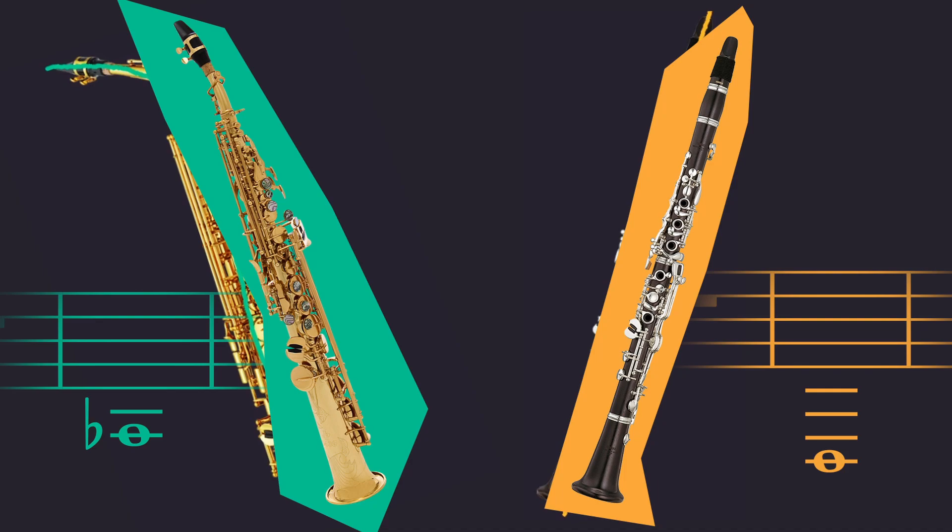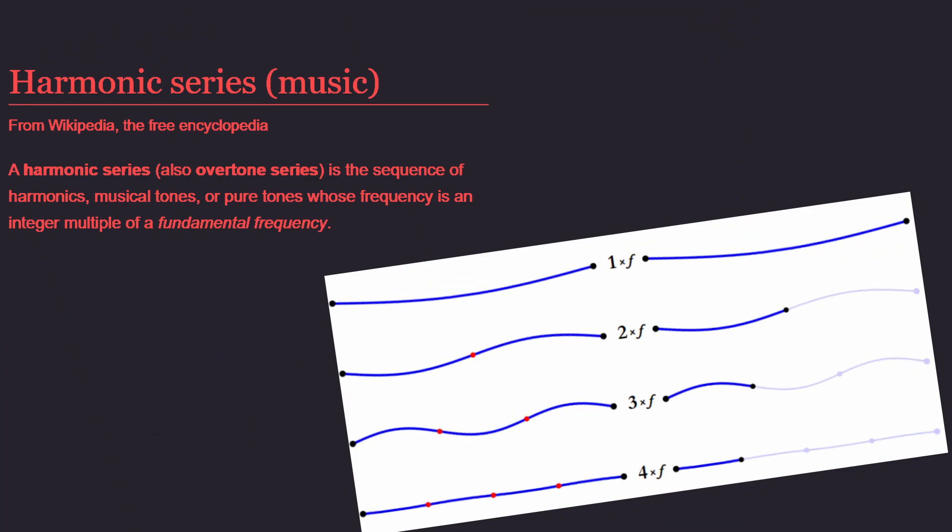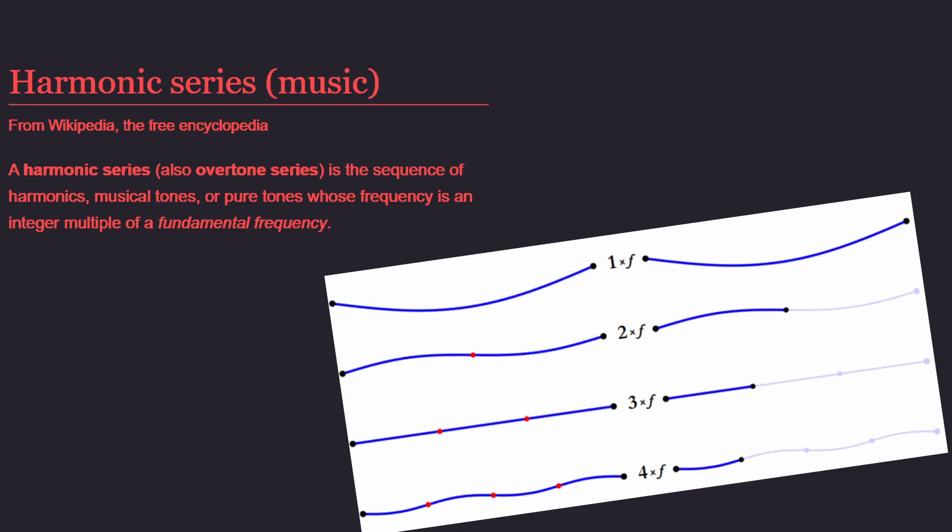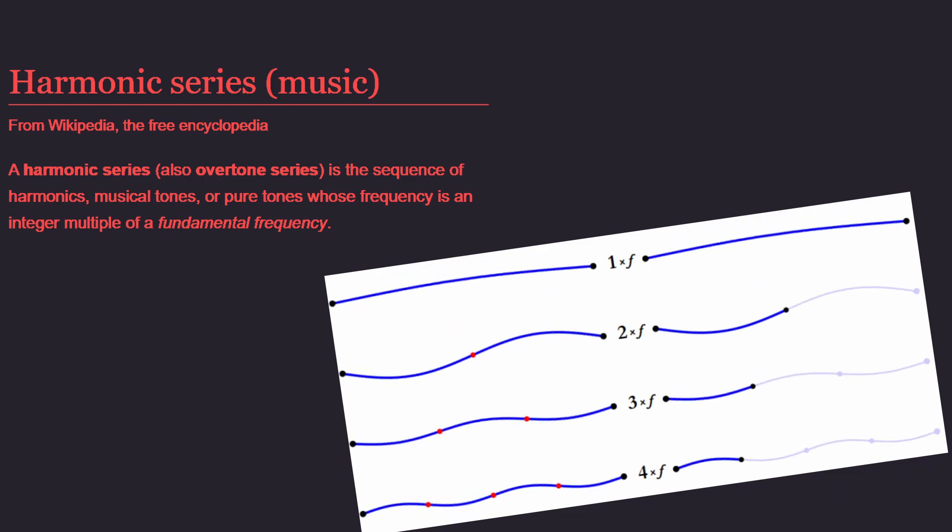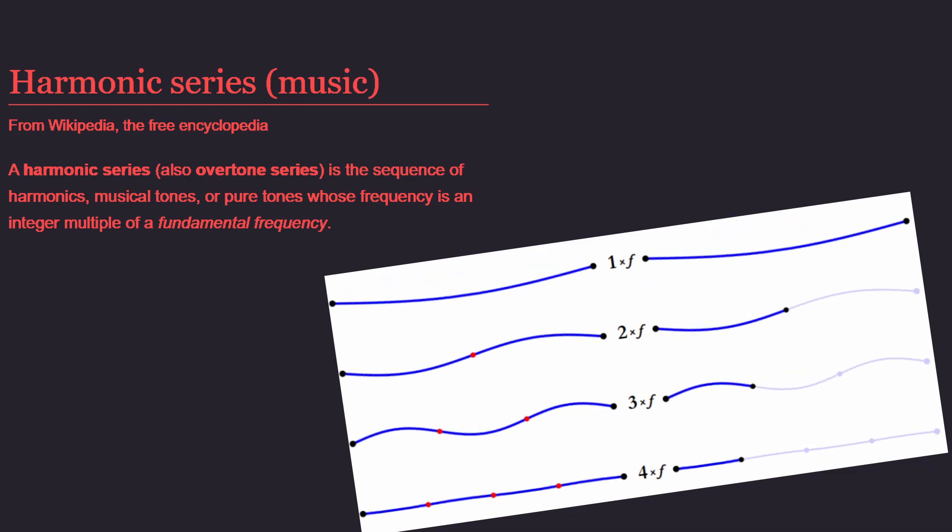There's also something else that doesn't seem right. A musician can actually produce a whole series of notes, even if all holes of the instruments are closed. These are called the overtones or harmonics of the instrument.